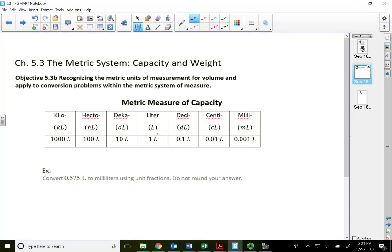So capacity using liters, the prefixes are all the same: kiloliter, hectoliter, decaliter, liter, deciliter, centiliter, and milliliters.